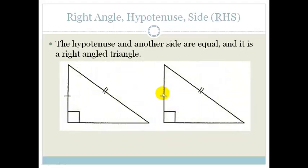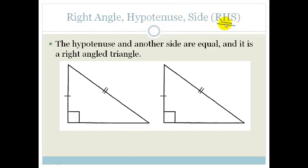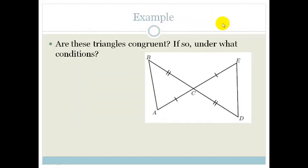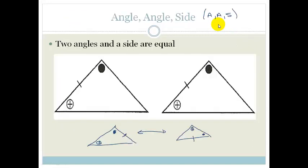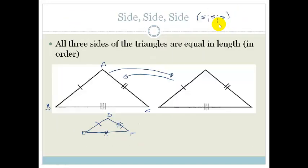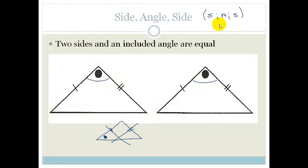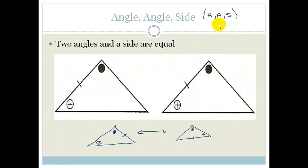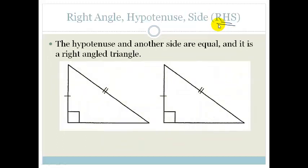Obviously, if you've got right angle, hypotenuse, side — where this side equals that side and the hypotenuse is equal — then the two triangles fit into each other and are congruent. The shortcut for that is RHS. So those are our four conditions of congruency: side-side-side, side-angle-side where the angle must be included, angle-angle-side, and right angle hypotenuse side.